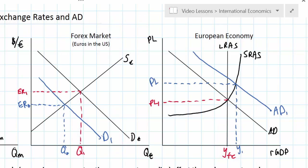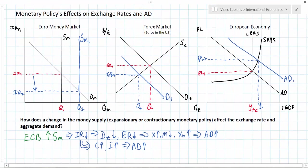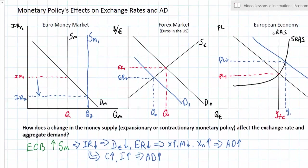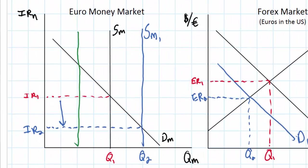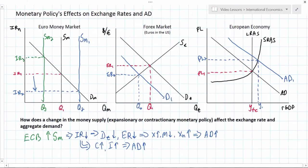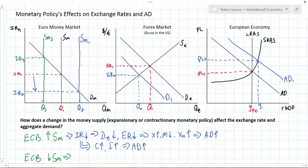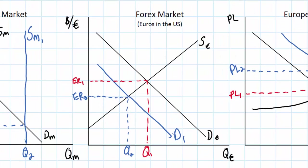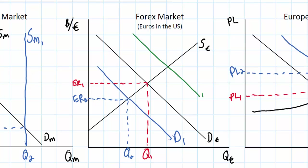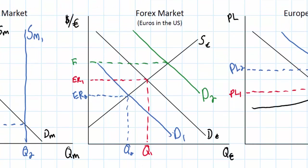Let's look at the opposite scenario. What if the European Central Bank enacted a contractionary monetary policy and sold bonds on the open market, causing the supply of euros in the banking system to decrease to Q3 and SM2. The scarcity of funds available for loans in the banking system will lead banks to raise their interest rates to IR3. The reduction in the money supply drives up interest rates in Europe, which causes the demand for euros to rise, as Americans will demand more investments in the European economy due to the higher rates of return. This increase in demand for the euro will cause the euro to appreciate — to get stronger against the dollar — to ER3.